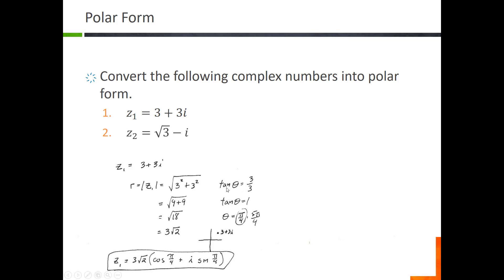To find theta, tangent of theta equals the imaginary over the real, so three over three equals one. Tangent equals one in the first and third quadrants, at pi over four or five pi over four. Since three plus three i is in the first quadrant, we use pi over four. So the polar form is Z equals three root two times the quantity cosine of pi over four plus i sine of pi over four.